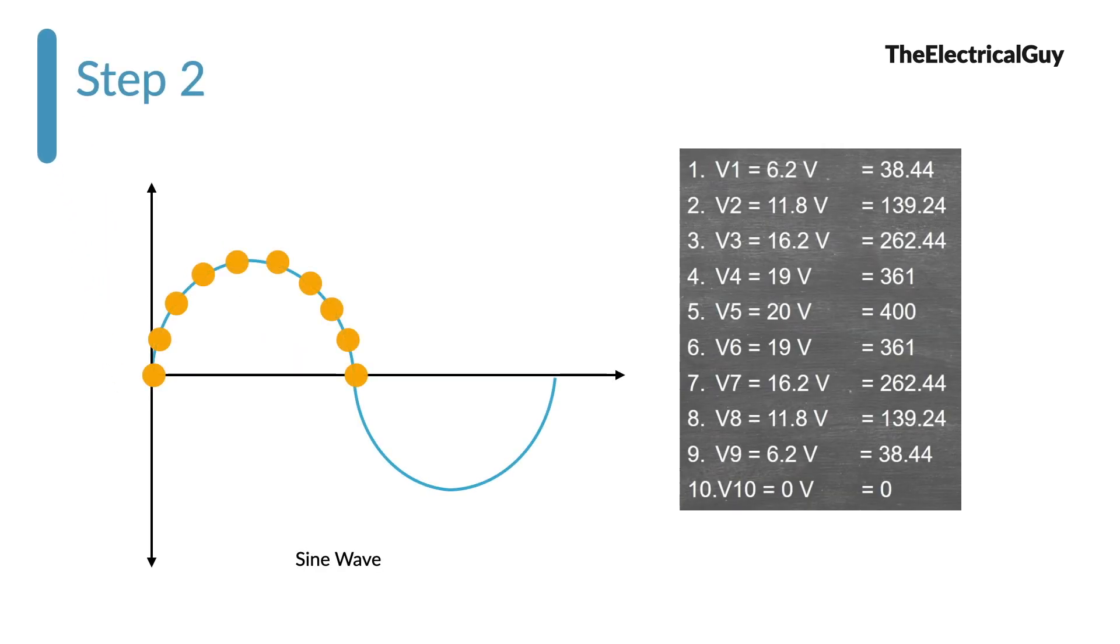Now step number 2. Take the square of each value. Simply take the square of each value that we have just marked.